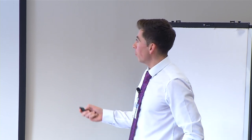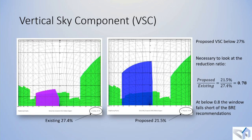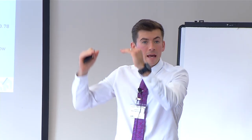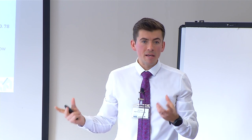Q: Where does the 25-degree rule come from? Why is it 25? A: Great question. The Vertical Sky Component absolute target is 27%. If you had a building across the whole horizon bang on that 25-degree angle from the window centre, that gives you exactly 27% VSC. So because of that 27% target, if you can fit everything under that 25-degree plane, it will automatically meet the test — that's why we use it.